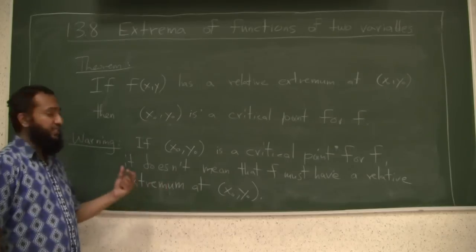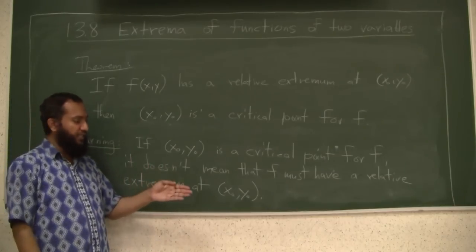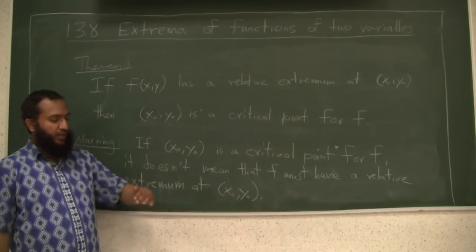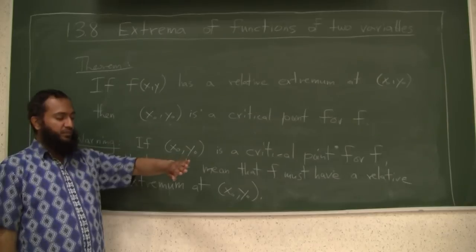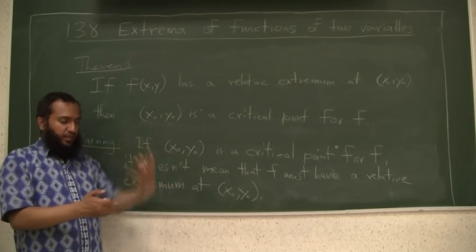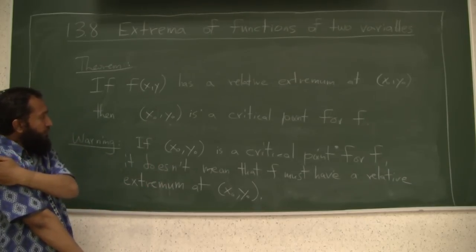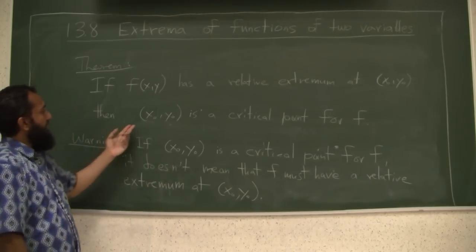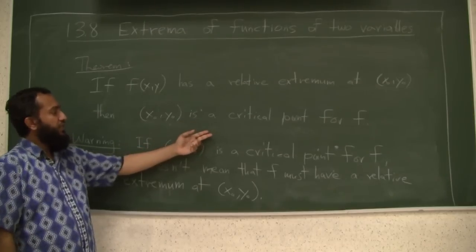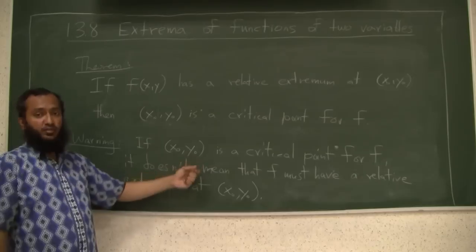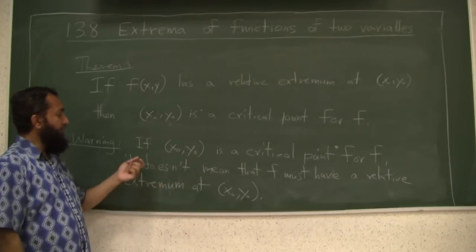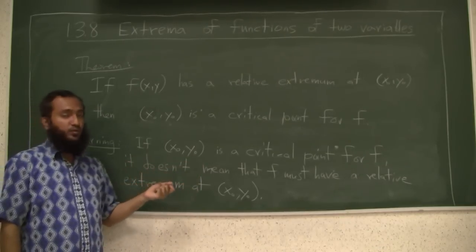And the reason is because it could be a saddle point, so it could be a point that is maximum with respect to y but minimum with respect to x, so overall it is neither a hill, neither a valley. So it is a saddle point. So if you have a relative extremum then it is going to be a critical point, but not all critical points will be a relative extremum. So when you want to test, now this tells us what we are going to do.